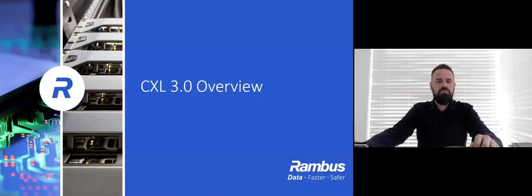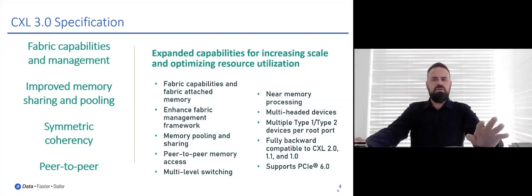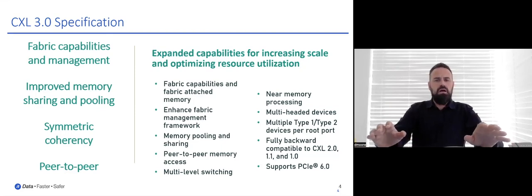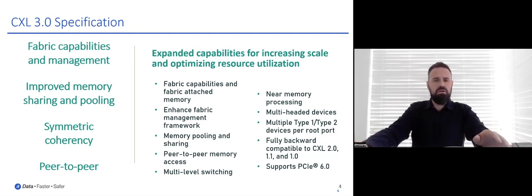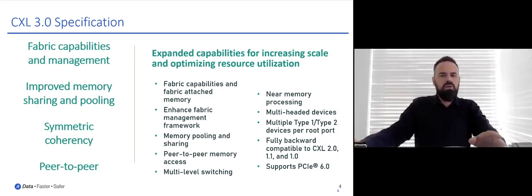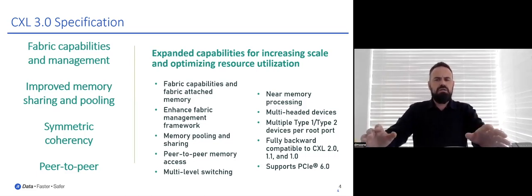So let's start off with the overview. The 3.0 spec has a ton of great new stuff. There's a lot of overlap on these key features with 3.0 really bringing composability and compute disaggregation to the next level. The fabric capabilities and management have been expanded. We define new port-based routing elements to the 3.0 fabric switch, so we're no longer constrained by the same host domains as before. We improve memory sharing and pooling — the functionality brought in 2.0 has been expanded in 3.0 with new device types and capabilities. We now define memory sharing, so resources in separate domains can share the same underlying memory capacity, which previously was a restriction.